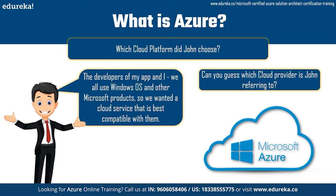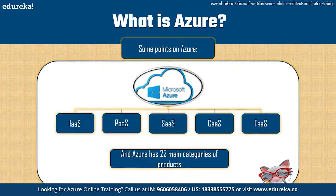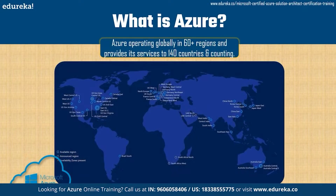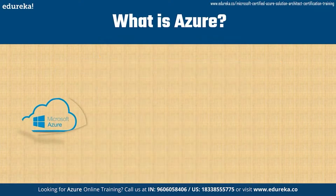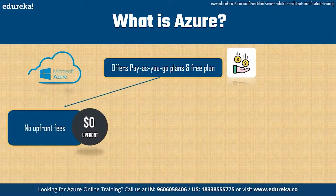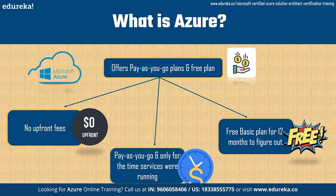Before we talk about the services, let's look at some interesting things about Azure. Just like every other cloud platform, Azure provides five distinct types of services: Infrastructure as a Service, Platform as a Service, Software as a Service, Container as a Service, and Functions as a Service. Azure has 22 main categories of products and operates globally in 60-plus regions, providing services to 140 countries and counting. Azure provides pay-as-you-go plans with no upfront fees, and also a free basic plan valid for 12 months.